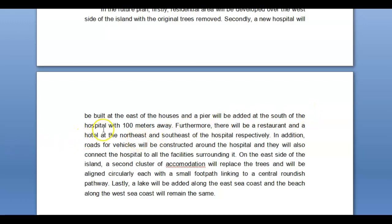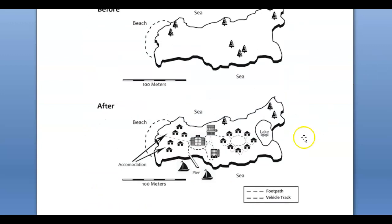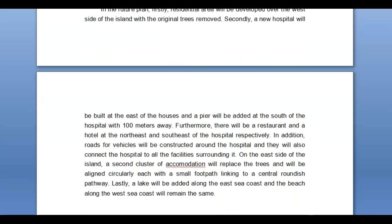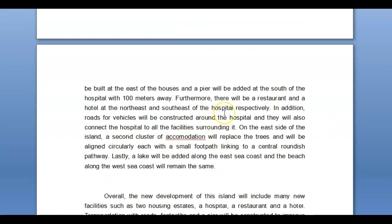For example, 'a pier will be added at the south' — how about 'a pier will be added at the southern coast of the island so that boats can dock and depart there'? You keep referring to the hospital, but maybe you could have referenced something else — talked about the central part of the island. In the north part of the central area there's going to be a restaurant, in the south part a hotel, and centrally located is the mall. That way you don't have to keep saying 'hospital' over and over.